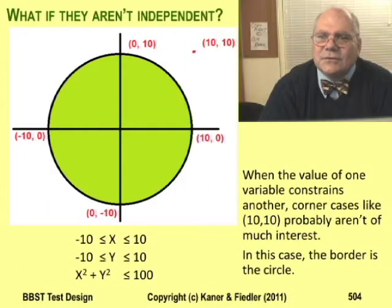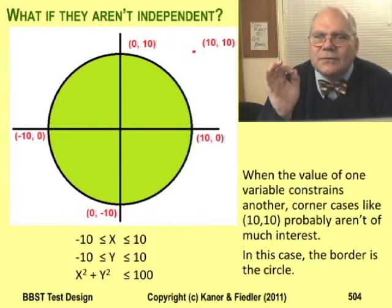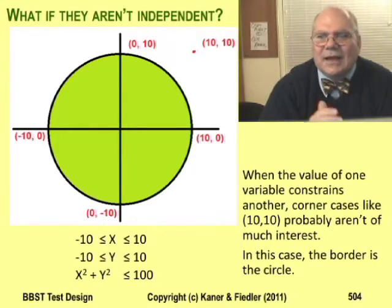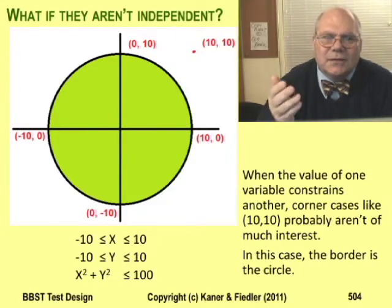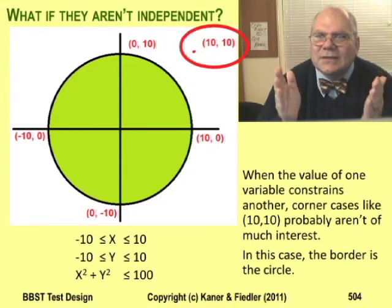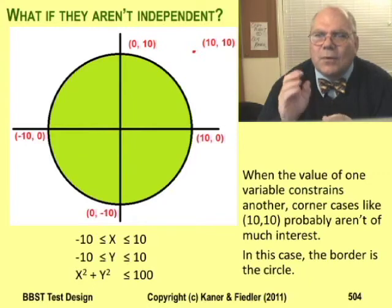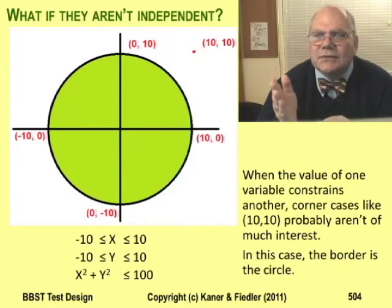Many discussions of domain testing feature tests of several non-independent variables together. This circle gives an example: the domain is defined by the relationship between two variables, x and y, which constrain each other. The constraint rule is x² + y² < 100, and the set of values meeting that constraint appear on the graph as a filled circle. If these variables were independent, I'd test their boundaries: x = -10, x = 10, y = -10, y = 10. But because of the dependence between the variables, a combination of boundary values makes absolutely no sense — pairs like x = 10, y = 10 are all far outside the circle, nowhere near any interesting place. The interesting tests lie right on the circle itself, or just inside or just outside it. The mechanical combinations of the boundaries miss the interesting area by a mile.